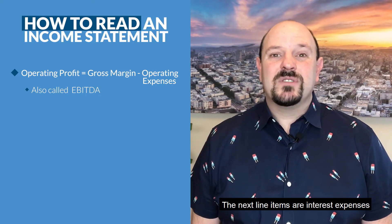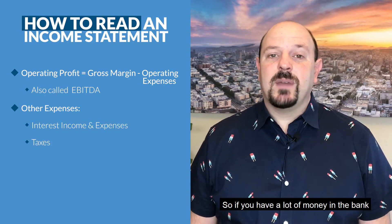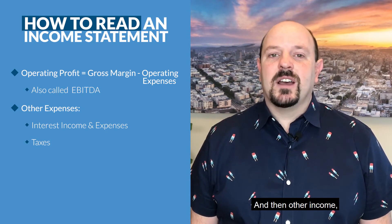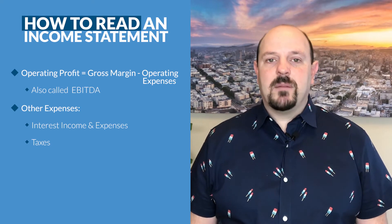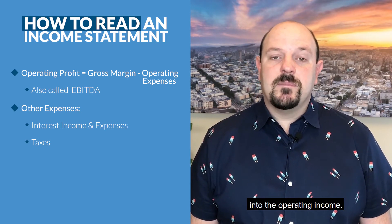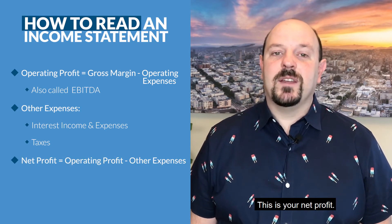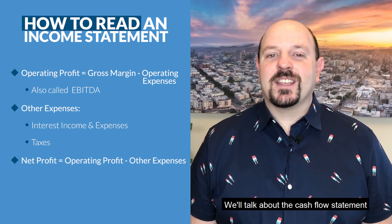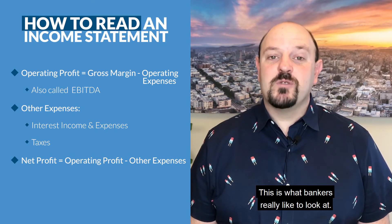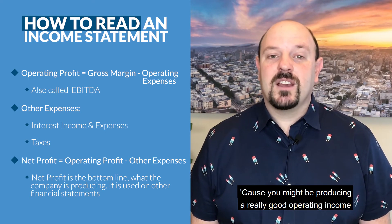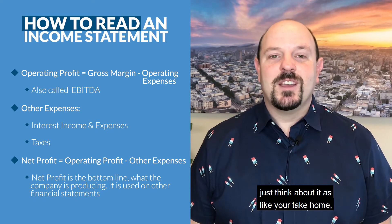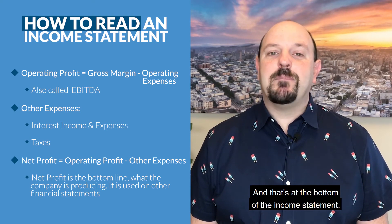The next line items are interest expenses or interest income. If you have a lot of money in the bank and you're getting a good interest rate, you can generate interest income. Many companies that have debt are actually paying interest expenses here. Then there may be other income — other kinds of things that pop in. You subtract or add these to operating income and you get to net income, your net profit. This is pretty much what you get to take home. Bankers really like to look at this because you might be producing a really good operating income but have huge interest expenses that eat up your whole operating income. So net profit is what the company is actually producing for all the work.